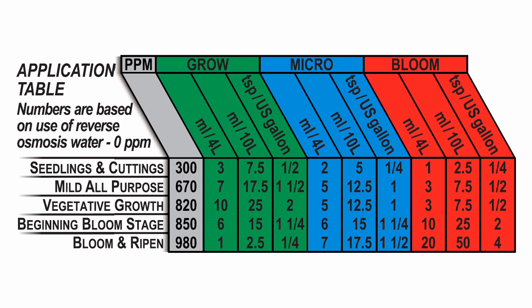Once your plants would be done with the seedlings and cutting stage, you could move on to the mild all-purpose or the vegetative growth stage. Before doing this, you would empty out your reservoir, get fresh water, and remix everything again.